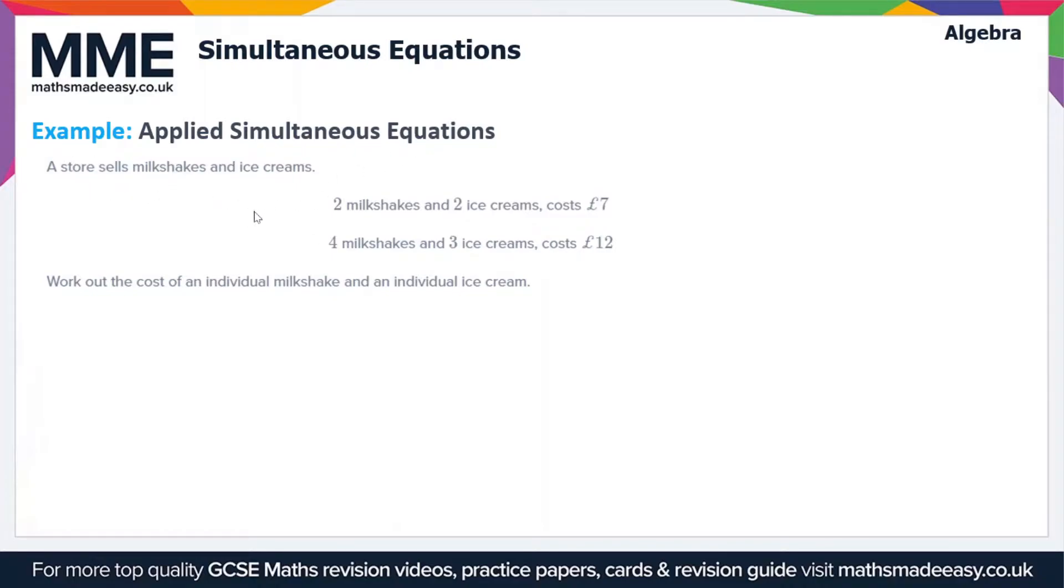A store sells milkshakes and ice creams. Two milkshakes and two ice creams cost £7. Four milkshakes and three ice creams cost £12. Work out the cost of an individual milkshake and an individual ice cream.